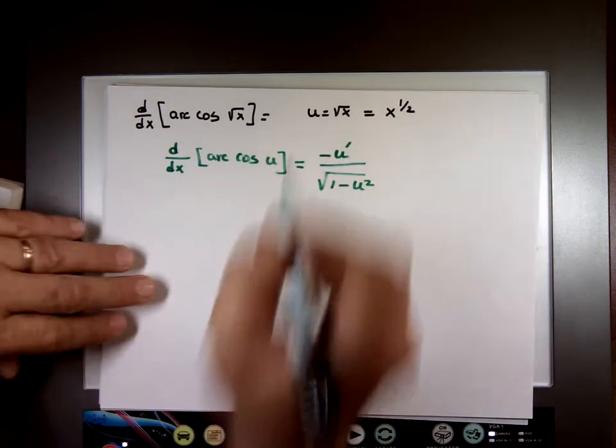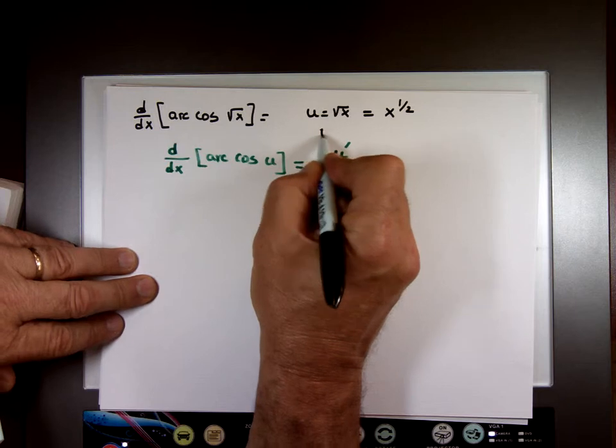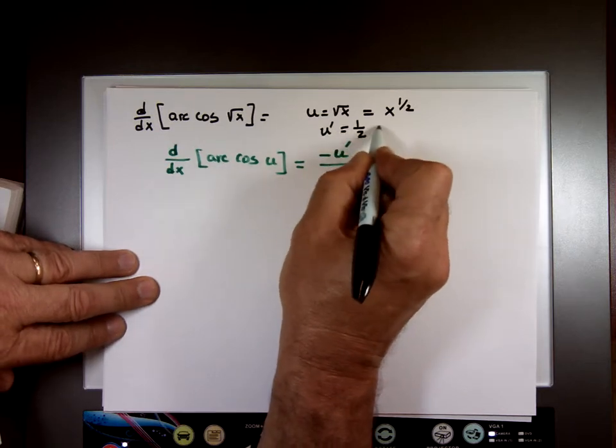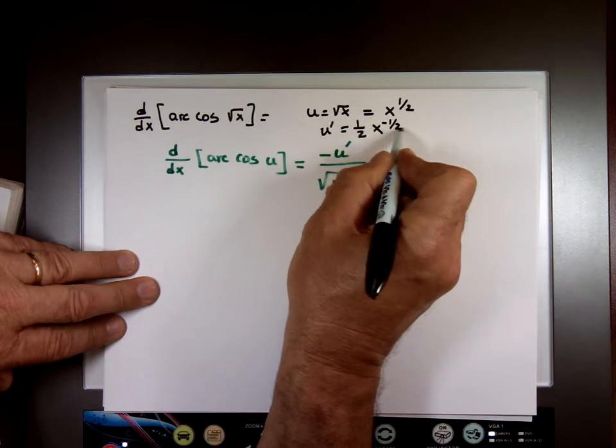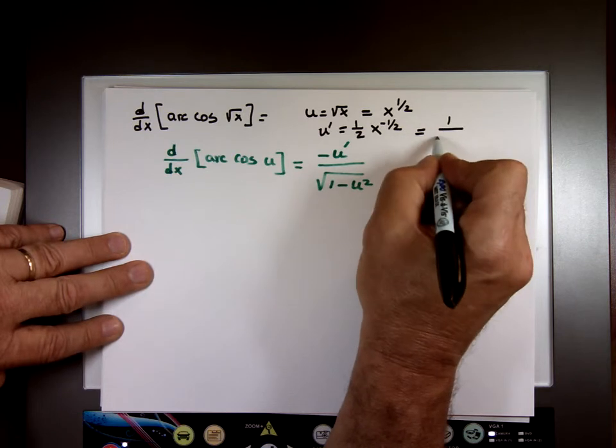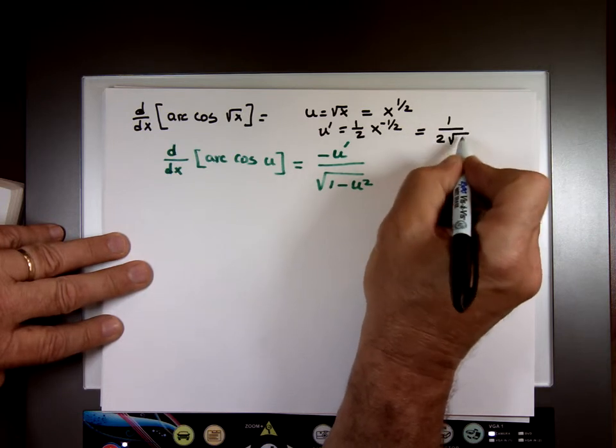which you can write x to the power of 1 half. What is the derivative of that? It's 1 half x to the power of negative 1 half, or 1 over 2 times the square root of x.